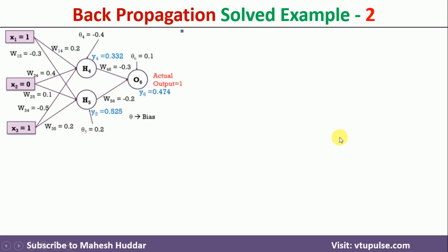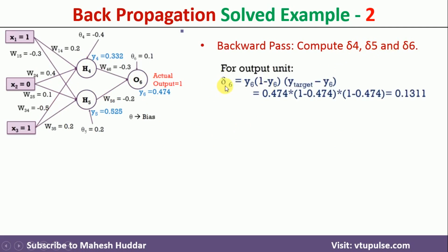Now we calculate the error term at h4, h5, and o6 — that is delta4, delta5, and delta6. Delta6 equals y6 × (1 − y6) × (y_target − y6), where y_target is the actual output and y6 is the calculated output. Substituting all known values, we get delta6 = −0.1311.